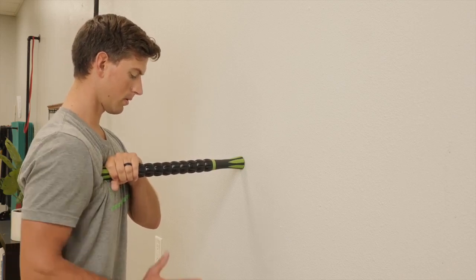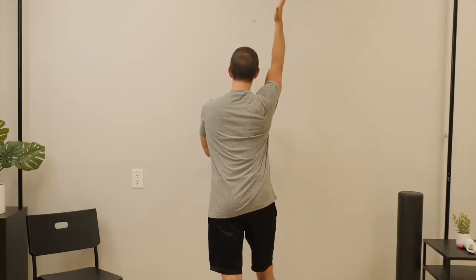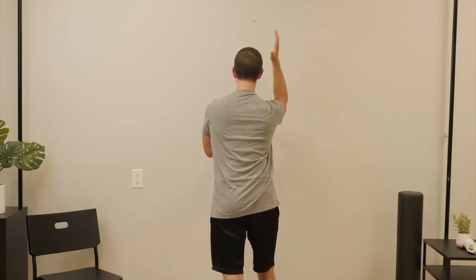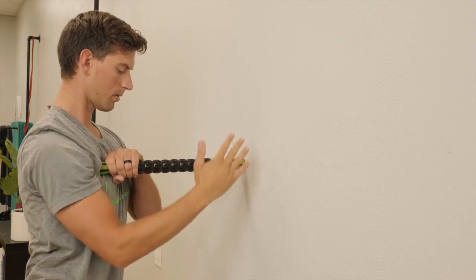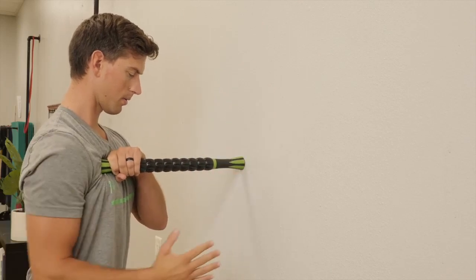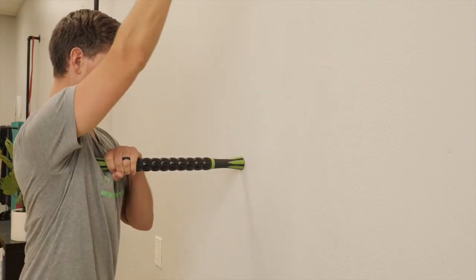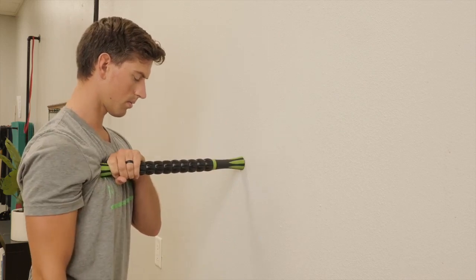When you have done 7 to 10 repetitions, pulling the shoulders down and back, you will begin to extend your arm overhead, allowing the muscle to roll underneath the pressure of the massage stick. Perform 7 to 10 more repetitions through this range of motion.